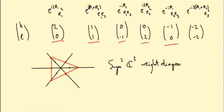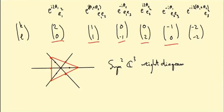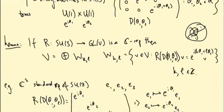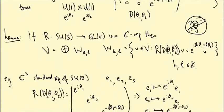It turns out the kinds of diagrams we'll get for representations of SU3 will be triangles and hexagons. Let's now prove the lemma so that we can decompose representations of SU3 into weight spaces indexed by pairs of integers.